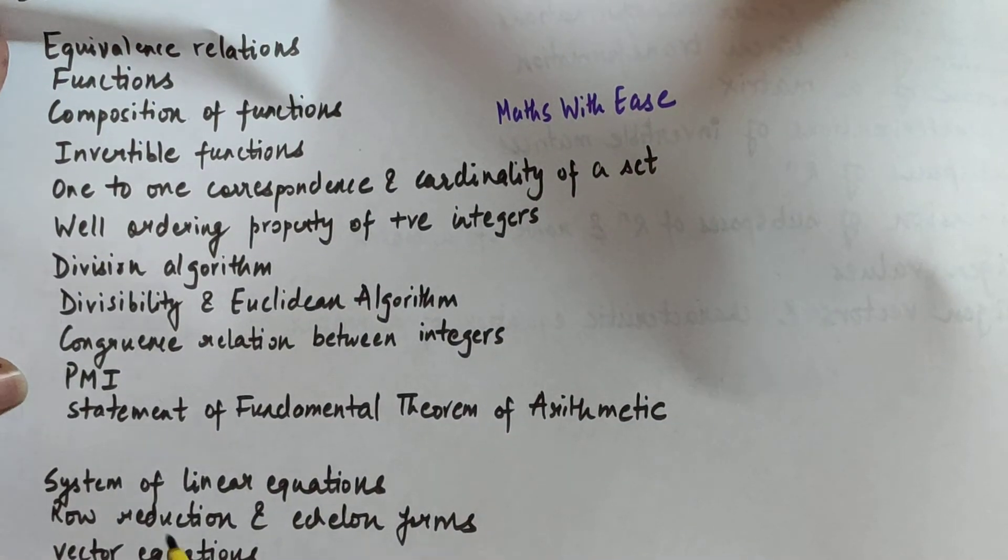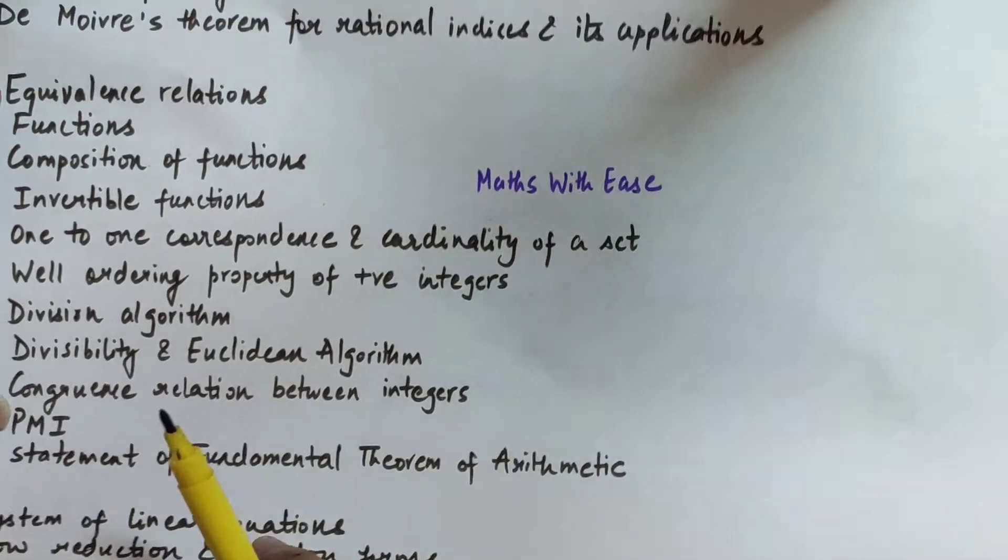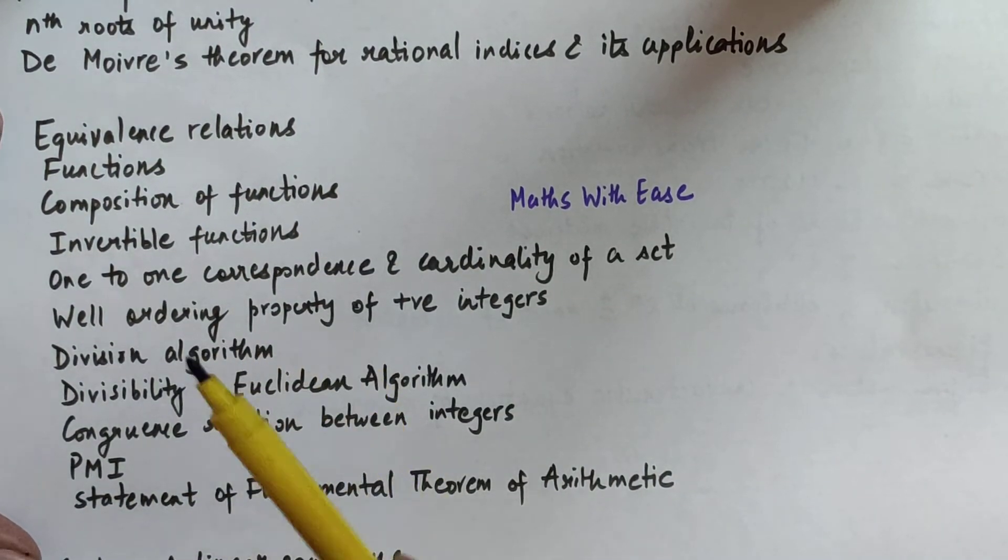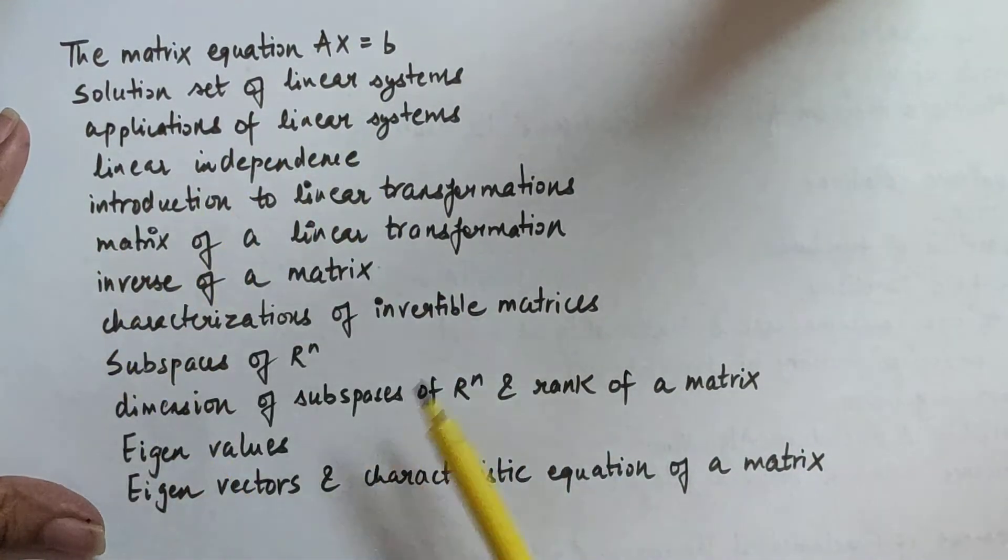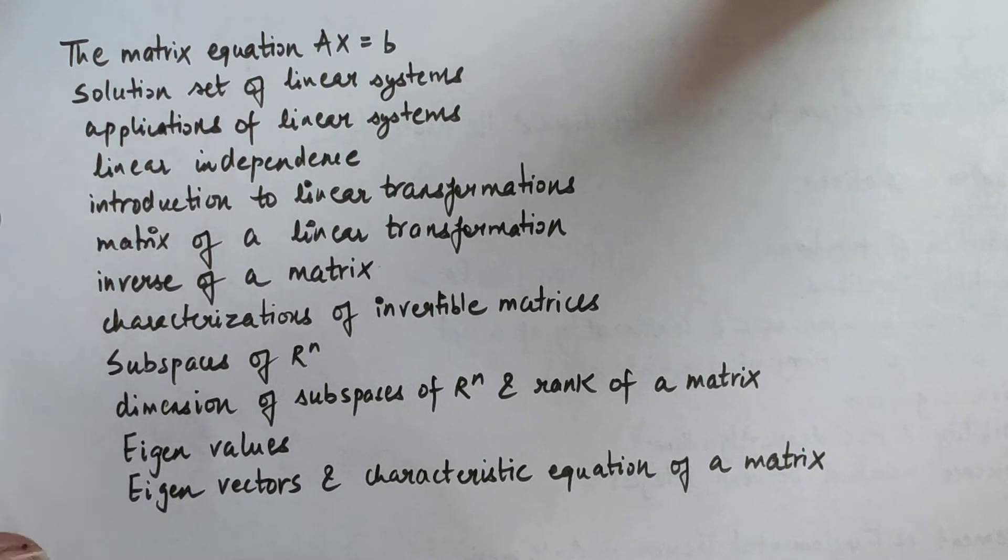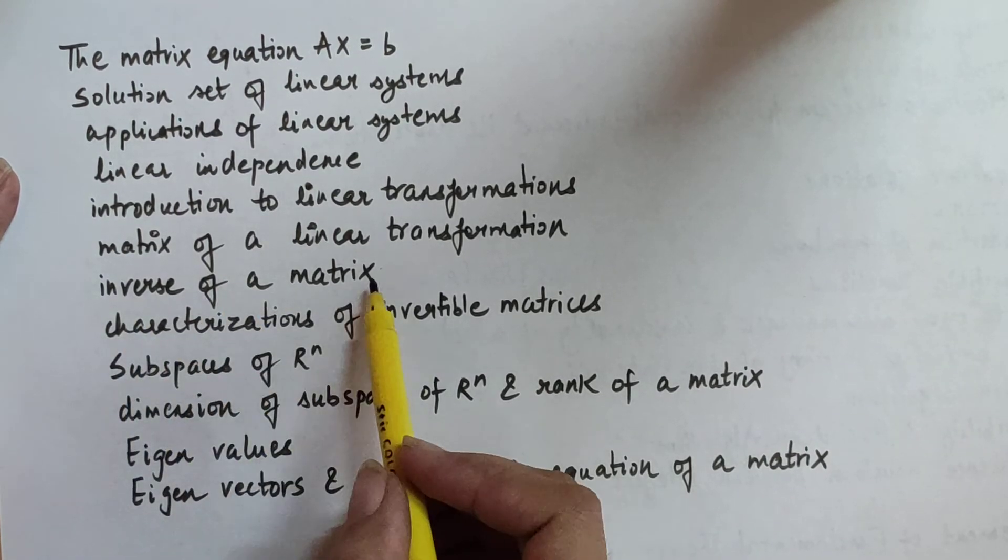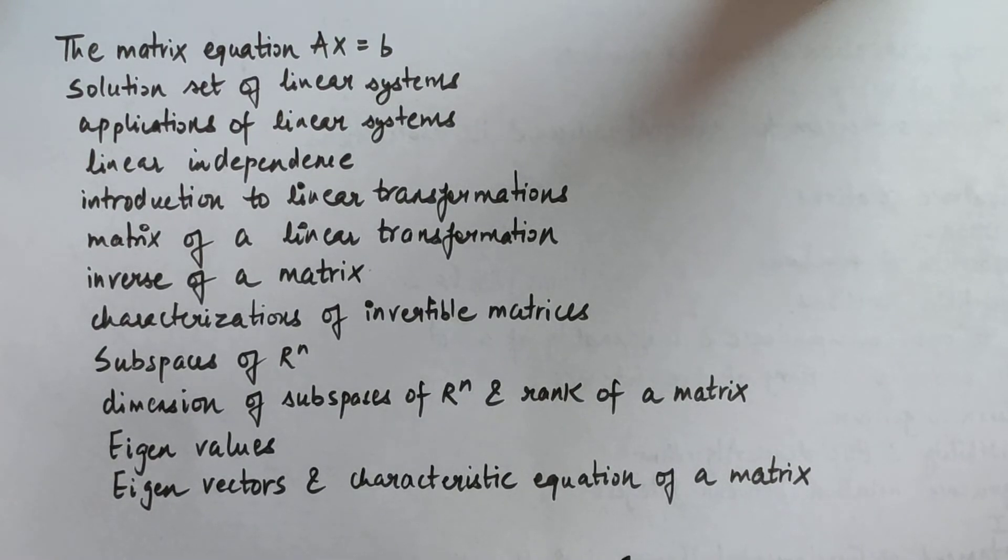Let's move on to the third and final section. It consists of three topics first, and the rest are upcoming: system of linear equations, row reduction and echelon forms, vector equations. First of all, I need to make this point that many of the topics from this section we have already covered in Class 12th, so we can just start revising. In continuation, this section consists of: the matrix equation Ax=b, solution set of linear systems, applications of linear systems, linear independence, introduction to linear transformations, matrix of a linear transformation, inverse of a matrix, characterizations of invertible matrices, subspaces of R^n, dimensions of subspaces of R^n and rank of a matrix, eigenvalues, eigenvectors, and characteristic equation of a matrix. This was the syllabus of Calculus and Algebra.